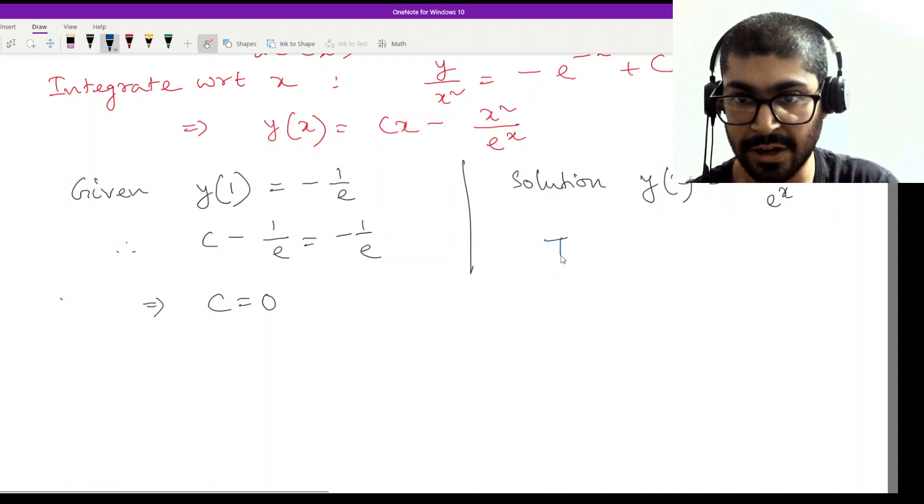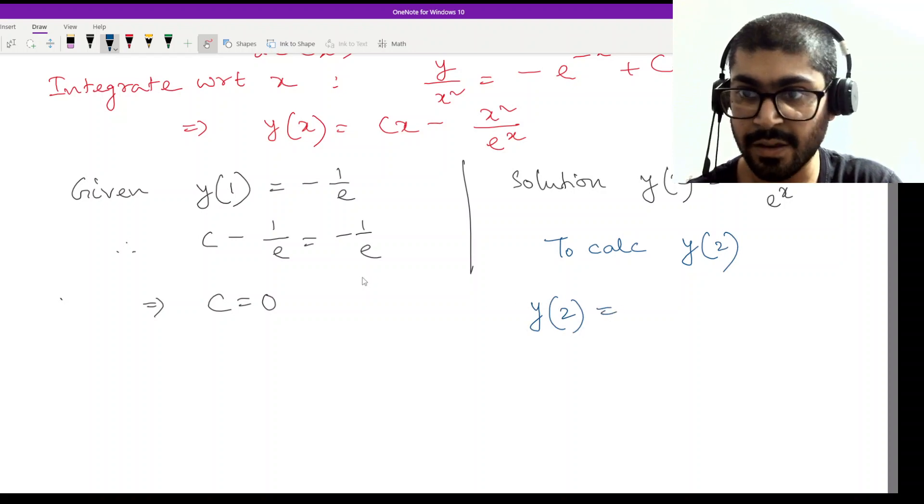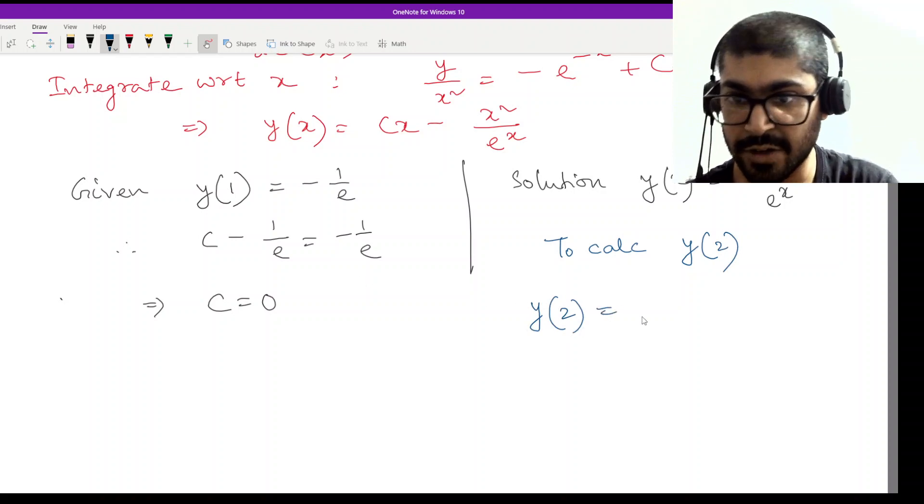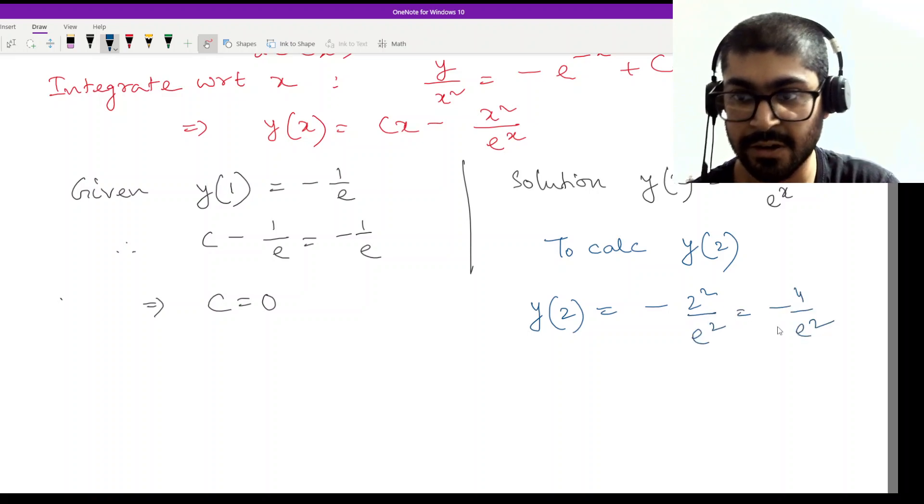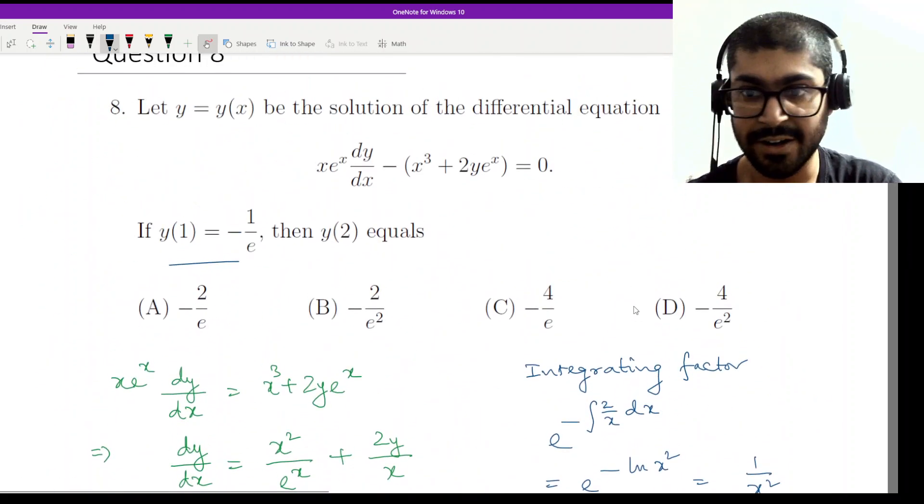Now what do we need to calculate? y(2). y(2) should be equal to -2²/e², which is -4/e². Now that is the solution of option D.